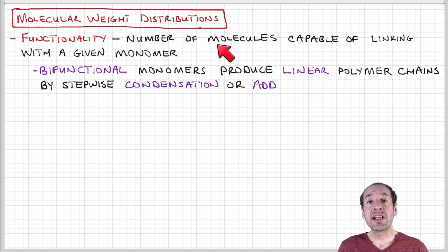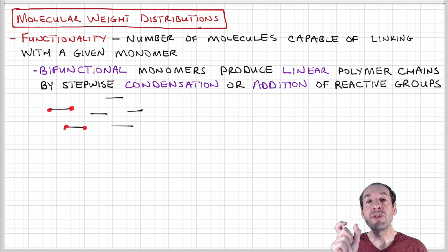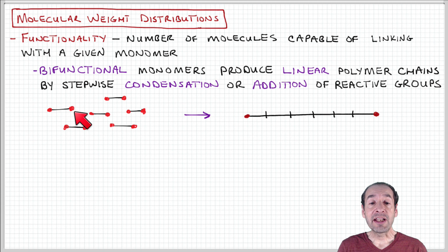The cases I've shown you previously are examples of bifunctional monomers, meaning they contain two functional groups, one at each end, like is shown with these red dots at each end of these monomer units.